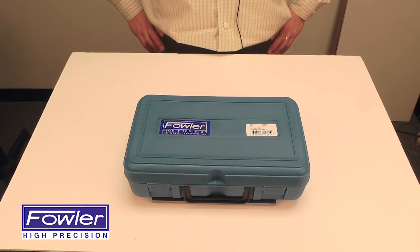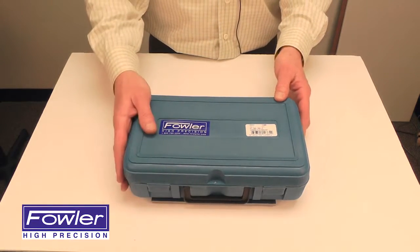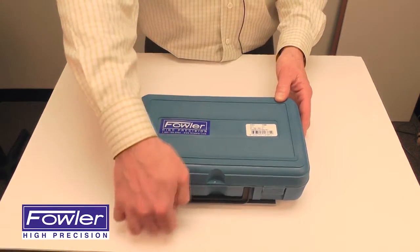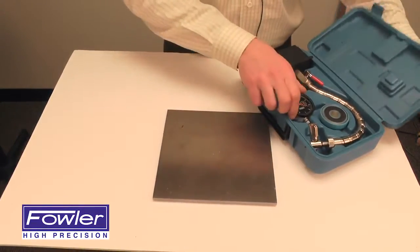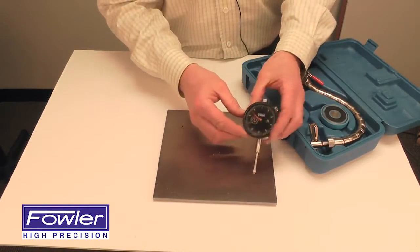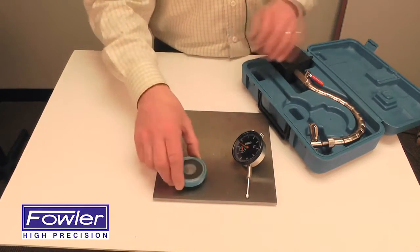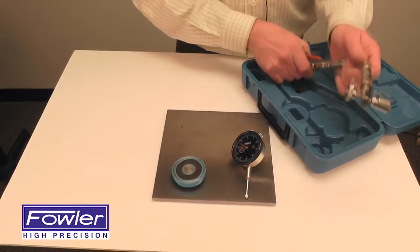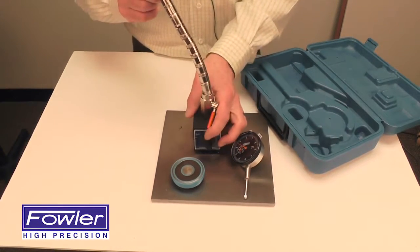The Fowler chrome flex arm magnetic base set is supplied in a custom fitted case. Each set contains a one-inch group 2 dial indicator, magnetic indicator back, and chrome flex arm magnetic base. The base has an on-off switch for easy mounting and dismounting.